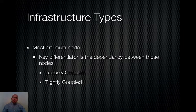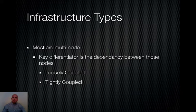The key differentiator is the dependency between those nodes. There's essentially a loosely coupled and tightly coupled offering. In the loosely coupled offering, each node is an independent, standalone entity and does not require the other nodes to be available. The limitations here could be scalability in that you're limited to the file size that you can fit inside that internal unit, although those units should scale quite large. You're also limited to some extent to the performance of the individual nodes.